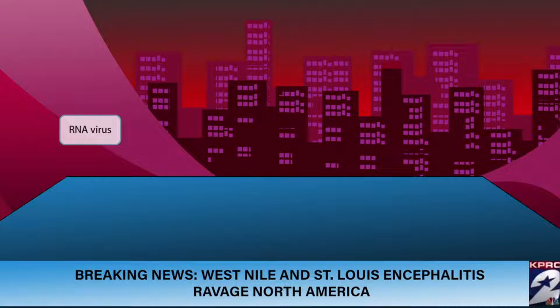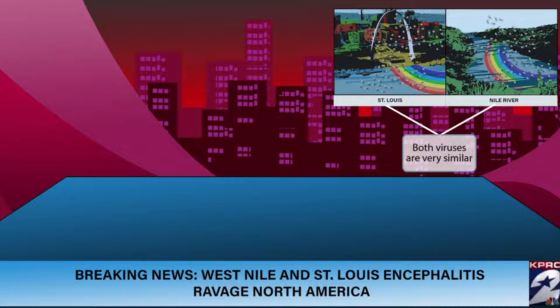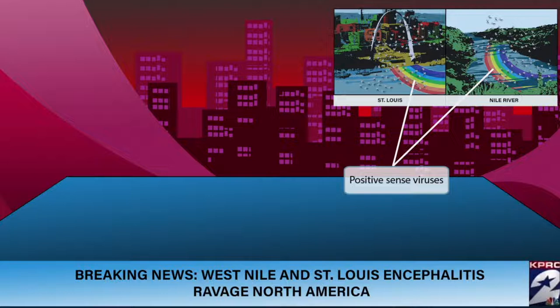The news station has a split screen effect going on at the top right. The left image shows a live feed of the St. Louis arch with swarms of mosquitoes, and the right image shows the West Nile with mosquitoes ravaging that area as well. Having the St. Louis arch and the West Nile right next to each other should help you remember that these viruses are so similar you should think of them together. Notice that there is a rainbow reflecting off of the water in both images — these positive rainbows indicate that both viruses are positive sense.